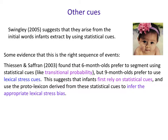There is some evidence that this is in fact the right sequence of events: first you rely on statistical cues, and then you derive more language-specific biases like stress cues afterwards. Thiessen and Saffran in 2003 found that if you pit statistical cues against lexical stress cues, at six months children prefer to rely on transitional probability cues. But at nine months, they prefer the lexical stress cues. So first you use statistical cues to figure out the patterns of your language and what words look like, and then afterwards — once you have that seed pool, that proto-lexicon — you derive things like lexical stress cues that are specific to your language.